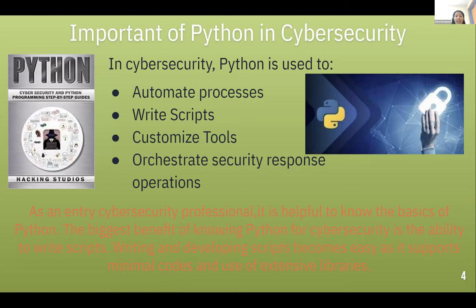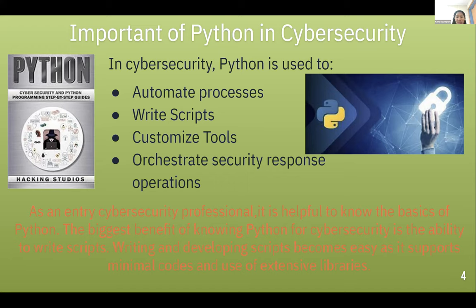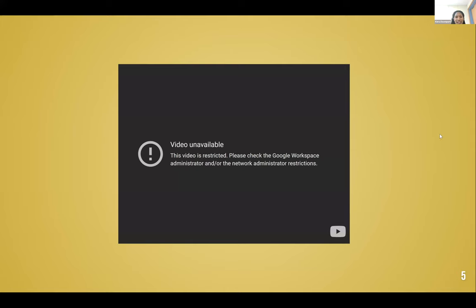The importance of Python in cybersecurity: Python is used to automate processes, write scripts, customize tools, and orchestrate security response operations. As an electrical engineering student at NCAT, Kiera will need to learn Python. Writing and developing scripts becomes easy because Python supports minimal code and use of extensive libraries. A Python library is a collection of related modules containing bundles of code that can be used repeatedly in different programs. During cybersecurity attacks, Python libraries and frameworks are relied on by experts. Pslist can list processes and identify when certain processes start and end. Pstree analyzes running processes with a tree architecture. Psscan uncovers terminated processes. Psview gives a comprehensive view of processes and their locations in the operating system. GRR (Google Rapid Response) is an incident response framework based on Python. SOAR (Security Orchestration Automation and Response) helps automate security tasks and is used during incident response when analyzing various alerts.